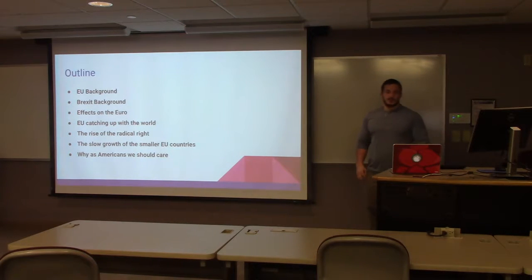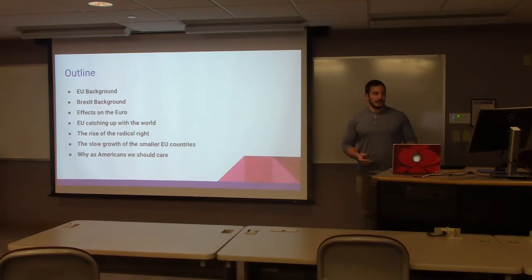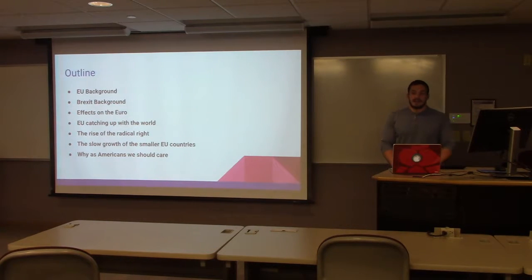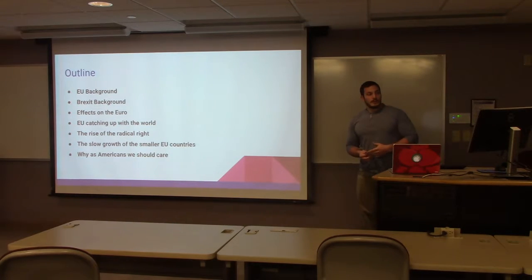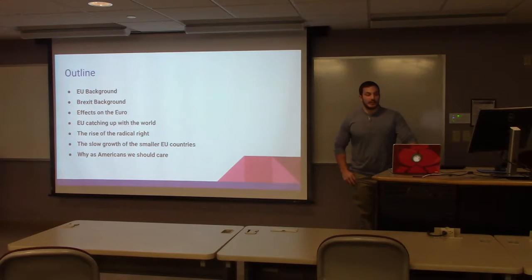A little outline of what I'm going to be talking about. I'm going to be talking about the European Union — when it was formed and what it is specifically. A little bit of background about Brexit, when it occurred and what it is specifically. The effects of Brexit on the euro and the rise and fall of prices. The EU catching up with the world technologically and how it is failing to take advantage of the market and the technological sector. The rise of the radical right in Europe, specifically after the Greek debt crisis. The slow growth of the smaller European Union countries. And finally, why, as Americans, we should be caring about this.